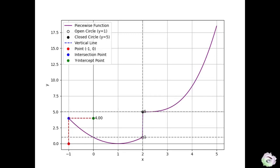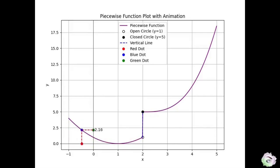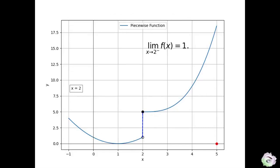The red dot shows the input x coordinate, and the green dot shows the corresponding y coordinate. Let's observe the movement of the y coordinate as x moves towards 2 from the left. We can see that as x moves towards 2 from the left, y moves towards 1. Therefore, we conclude that the left limit of f at 2 is 1.